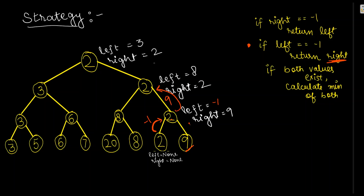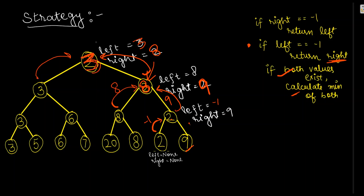If left is minus one, simply return the right value - so it returns nine. Right is updated to nine while left remains eight. If both values exist (neither is minus one), calculate the minimum of both. Out of eight and nine, minimum is eight. Returning up: right is eight, left is three, so minimum of three and eight is three. We got the second minimum number three, after two.